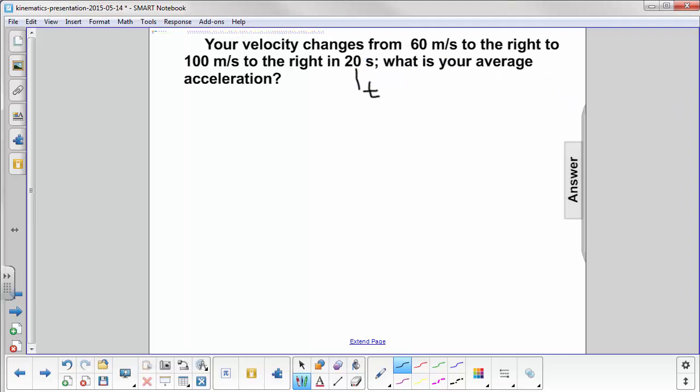Your initial velocity, and here's where you have to make sure you read the question carefully, is 60 meters per second to the right. And since we're going to the right, we'll make that a positive. So that's positive 60 meters per second.